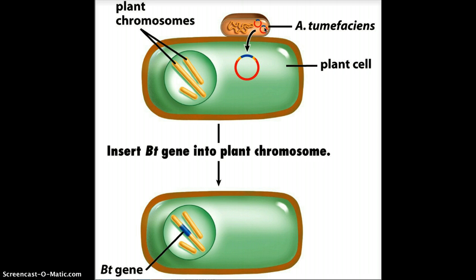As part of the normal infection cycle of this bacteria, the plasmid is inserted into the plant cell, and that plasmid DNA is actually taken up by the plant chromosomes.